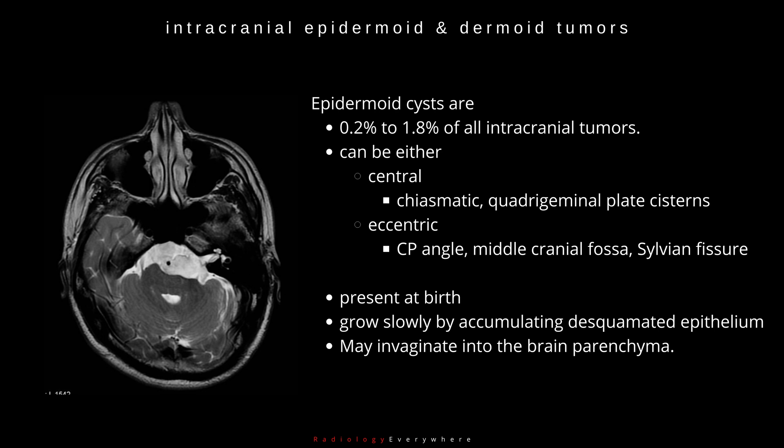Epidermoid cysts are present at birth but grow slowly by accumulating desquamated epithelium, conforming to the shape of the portion of the subarachnoid space they occupy. They may also invaginate into the brain parenchyma.